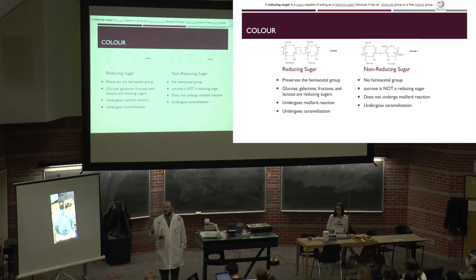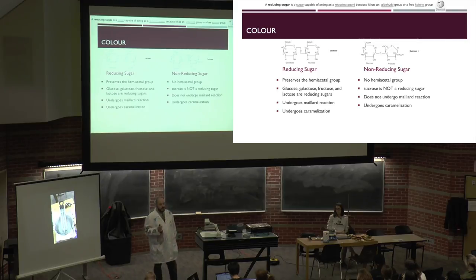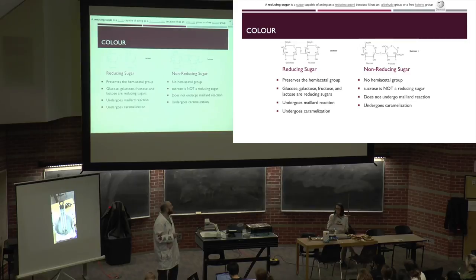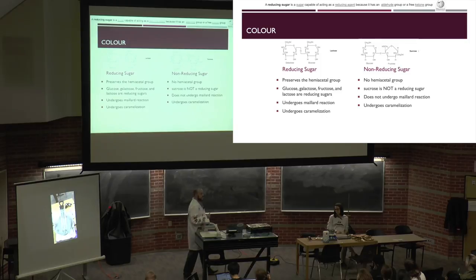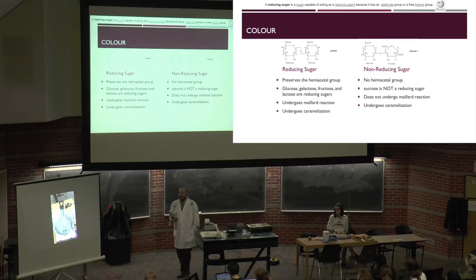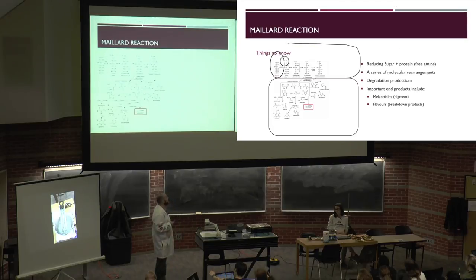Reducing sugars undergo both browning reactions: Maillard reaction and caramelization. Non-reducing sugars don't have the hemiacetal group and are unable to partake in the Maillard reaction, but they can still undergo browning through caramelization.